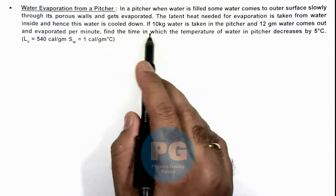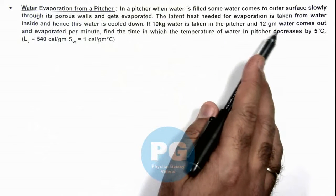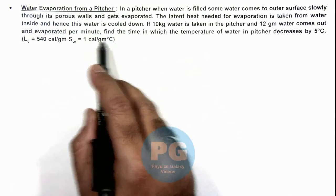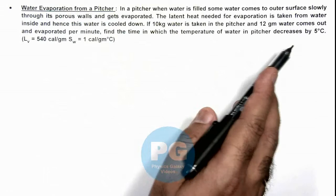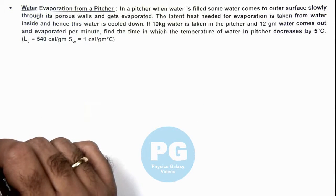It is saying if 10 kg water is taken in the pitcher and 12 gram water comes out and evaporated per minute, we are required to find the time in which the temperature of water in pitcher decreases by 5 degree centigrade. Latent and specific heats of water are also given.